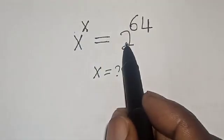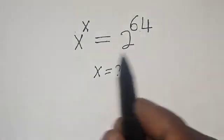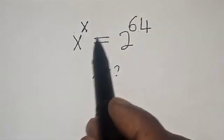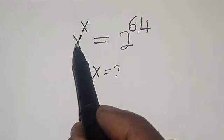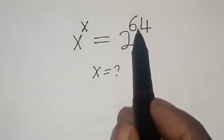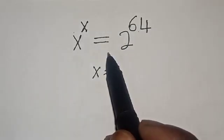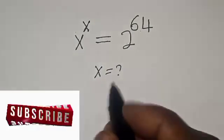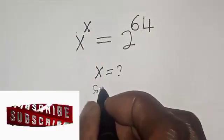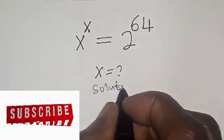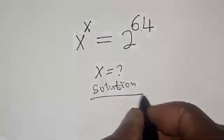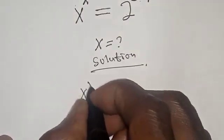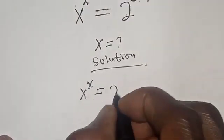s raised to power s is equal to 2 raised to power 64. Hi everyone, welcome to my class. In this class, I want to find the value of s from this given exponential equation: s raised to power s is equal to 2 raised to power 64. But before we proceed, please don't forget to like, share, comment, and subscribe. Thank you.